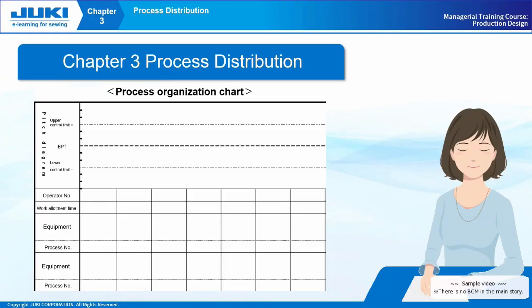Chapter 3: Process Distribution. In Chapter 3, we will learn about process distribution using the process organization chart shown in the figure. Process distribution is an important work in production design to create an optimal production line.